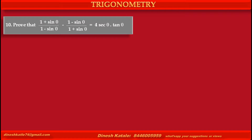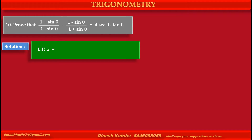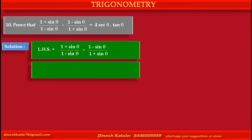Problem 10: Prove that (1 + sinθ)/(1 - sinθ) minus (1 - sinθ)/(1 + sinθ) is equal to 4 × secθ × tanθ. Solution: The left hand side is equal to (1 + sinθ)/(1 - sinθ) minus (1 - sinθ)/(1 + sinθ).